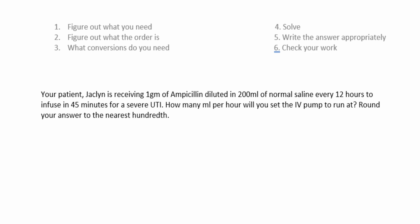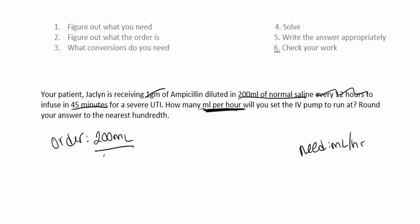Your patient Jacqueline is receiving one gram of ampicillin diluted in 200 mL of normal saline every 12 hours to infuse over 45 minutes for a severe UTI. How many milliliters per hour will you set the IV pump to run at? Round to the nearest hundredth. First, what do we need? Milliliters per hour. Next, what is ordered? There's extra information here — we don't need the every 12 hours or the one gram. We just need 200 mL in 45 minutes.